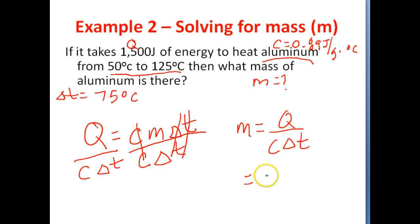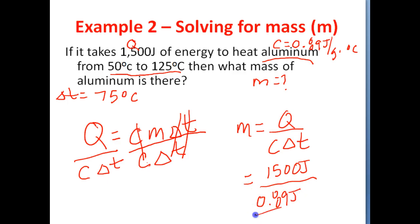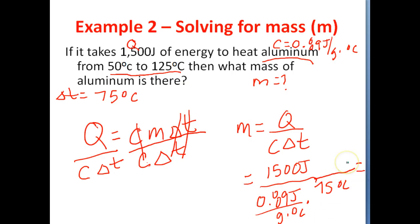Q in this problem is 1,500 joules. The specific heat of aluminum is 0.89 joules over grams times degrees Celsius. The change in temperature is 75 degrees Celsius. So we take 1,500 divided by 0.89 times 75, and we end up with an answer of 22.5 grams.